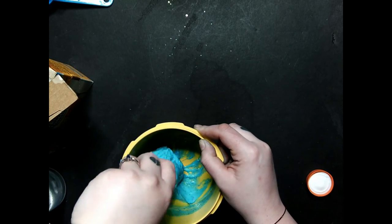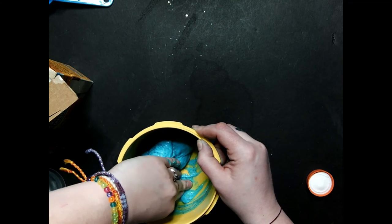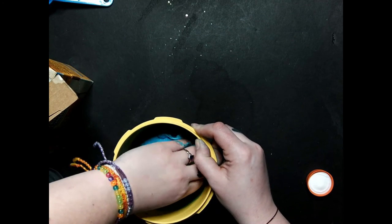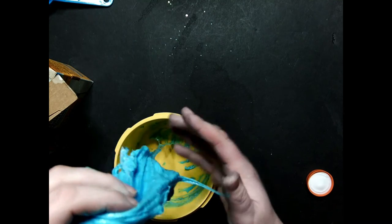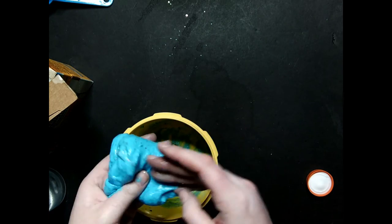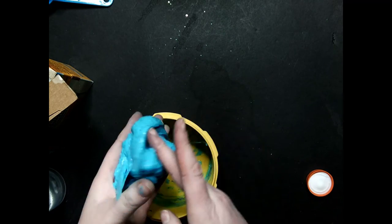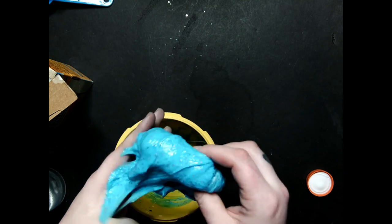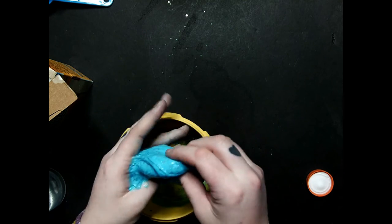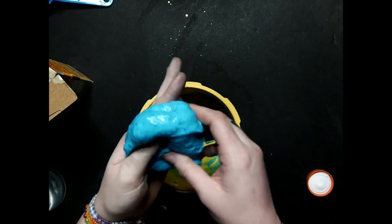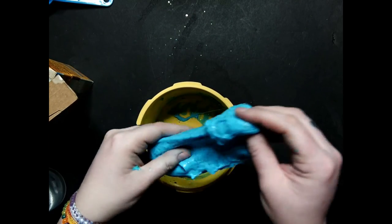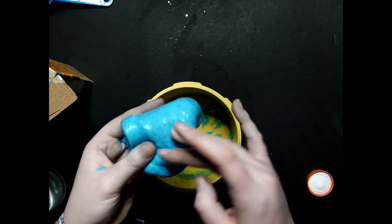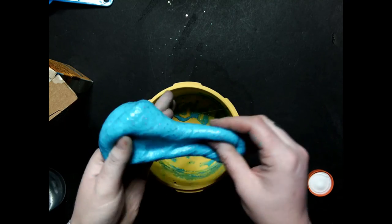So if it's still after mixing for a little while still really sticky, you can go ahead and add a little bit more contact solution. But just do a couple drops at a time. Otherwise you might overdo it. But if that happens, you can always go ahead and add a little bit more glue to counteract the overuse of the contact solution.